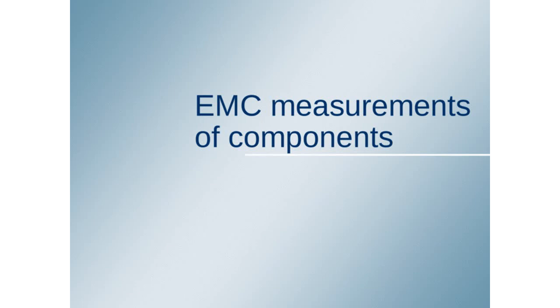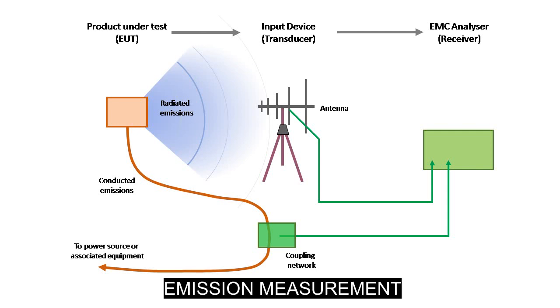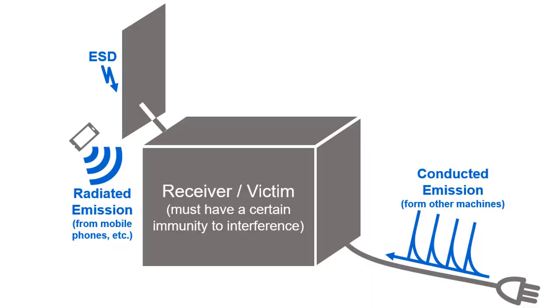Now we will discuss EMC measurements. First, we discuss emissions. Emission is every electromagnetic disturbance that is produced by the equipment under test (EUT) and given off to the environment. To guarantee the proper operation of other equipment in the vicinity, this unintended emission must be limited. Signals can generally be transmitted through air or along cables, resulting in radiated and conducted emission.